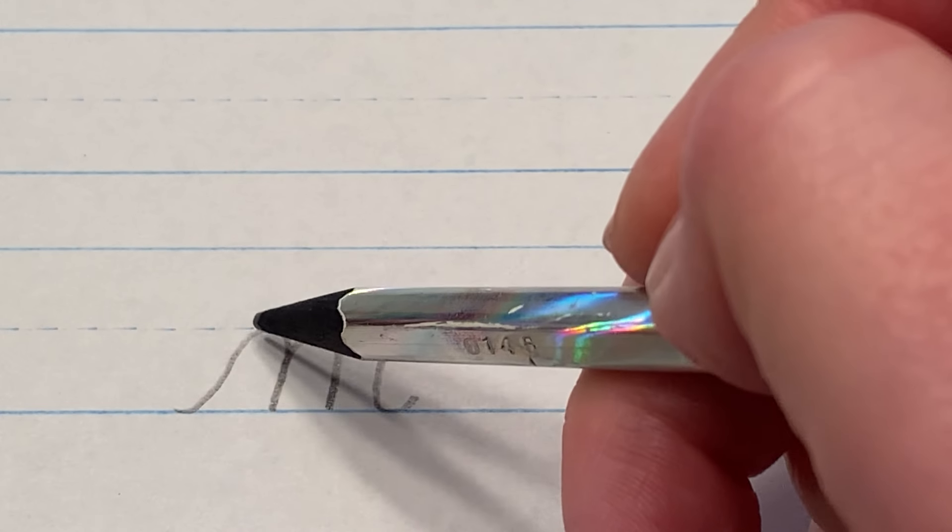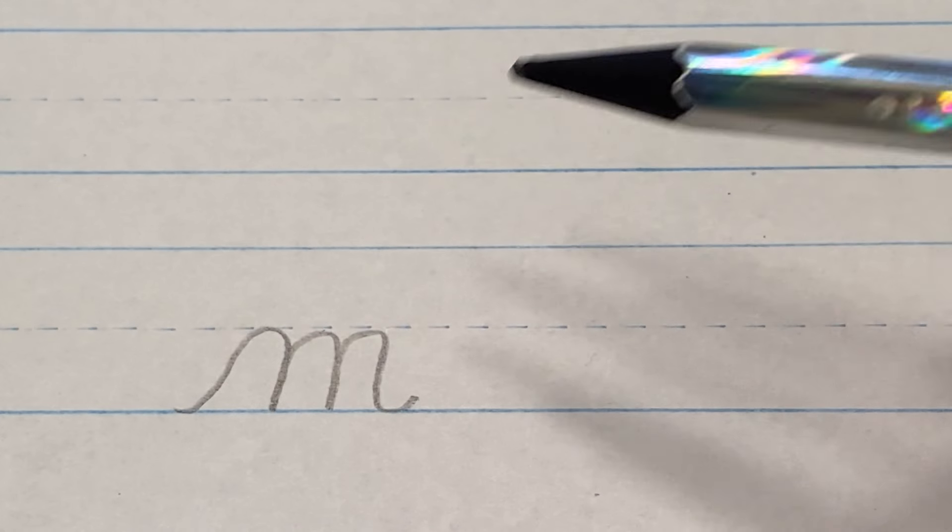You'll notice that on the cursive M there are three humps, whereas when you print it there's only two. So you have to remember to get all three of those in. Let's try again.